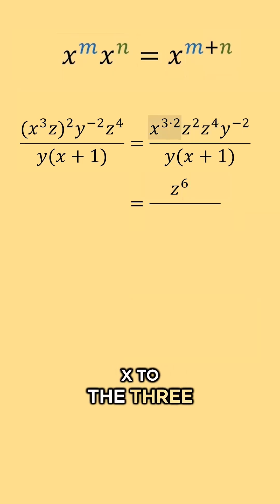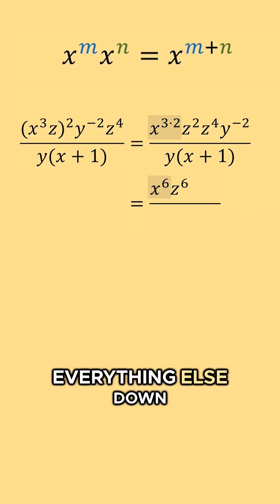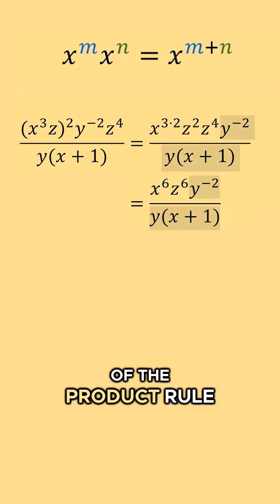And I'm going to bring down x to the three times two, which is x to the sixth. Now I'll just bring everything else down as it is. So for now, we took care of the product rule.